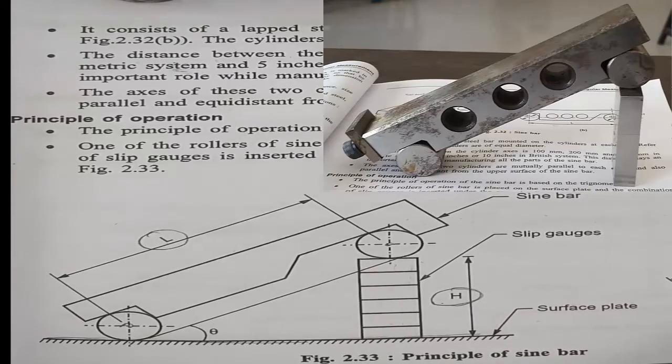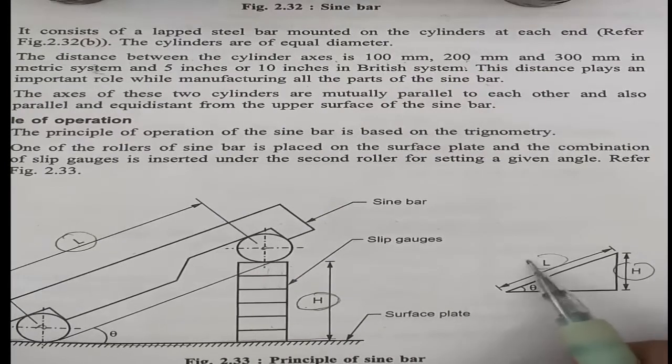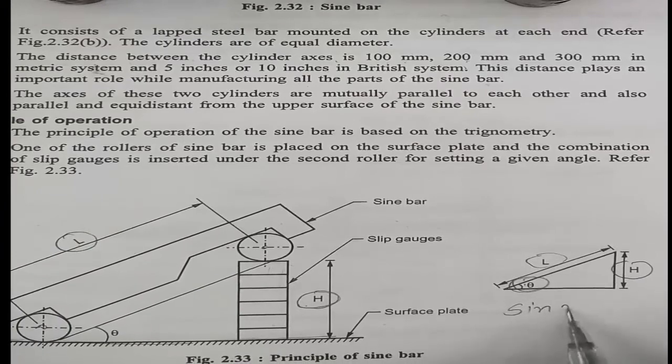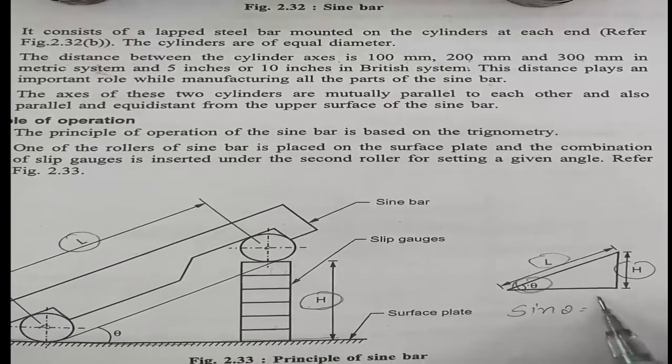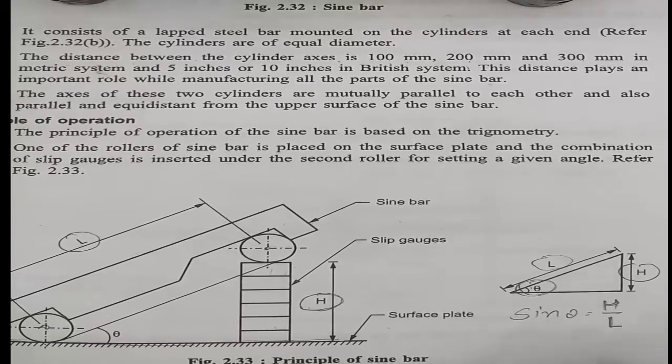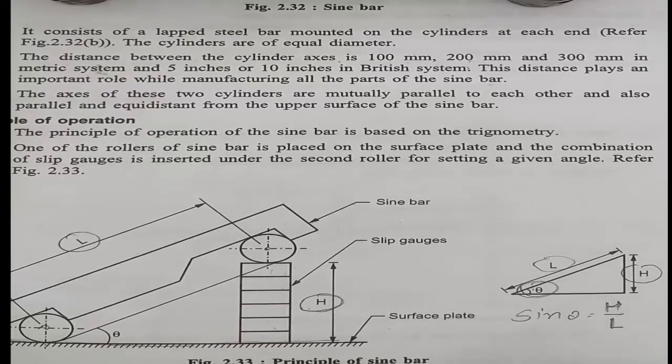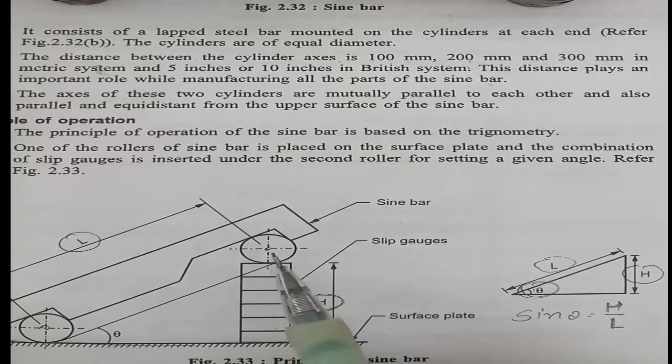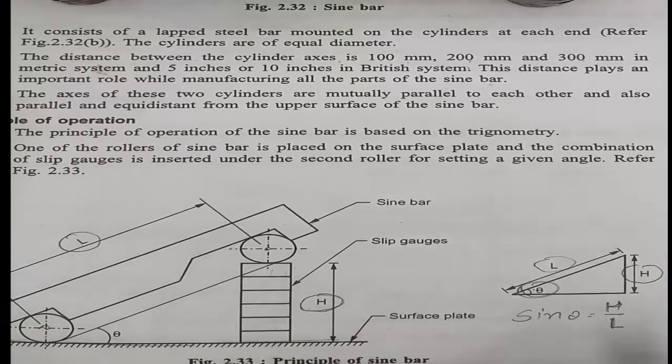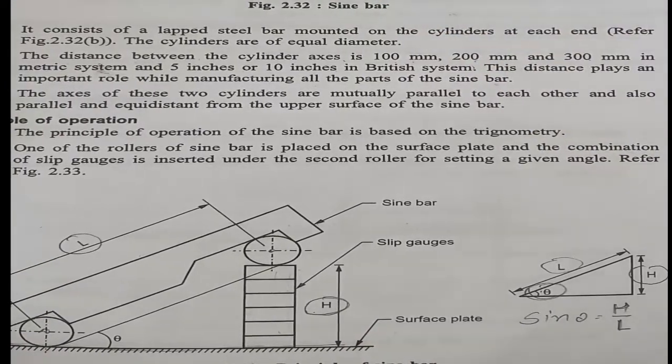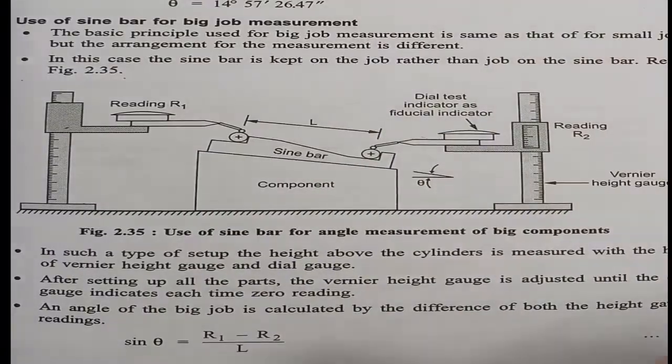If we know this height h and length L, then we can easily measure this angle theta. Sine theta equals h by L. By this way we can measure the angle theta. This is the basic operation for sine bar and slip gauge for measuring angle.